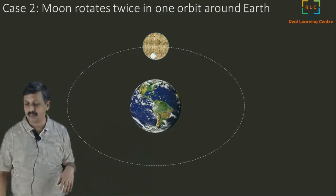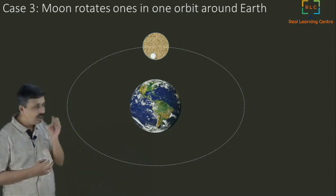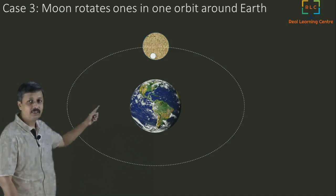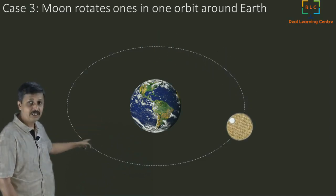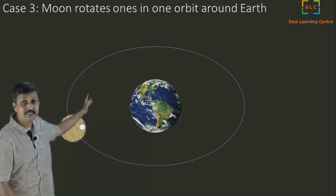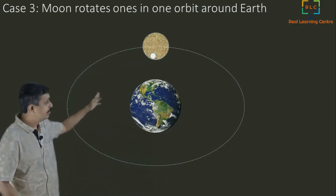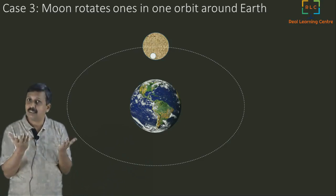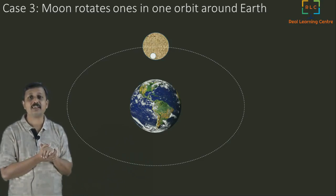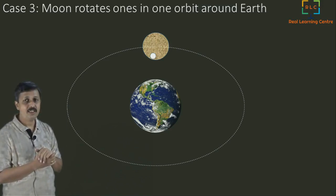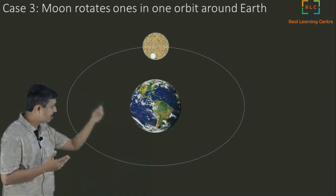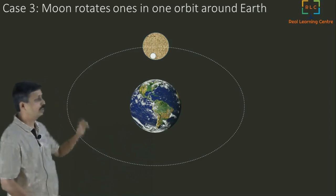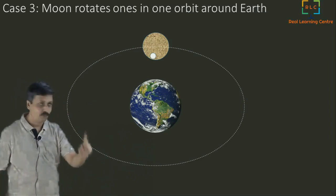Now case three: the moon rotates around its own axis only once while it completes one full orbit around the Earth. Watching carefully — as it rotates around its axis, we are still seeing the front of the moon throughout the entire journey. We keep seeing only the front of the moon, which matches our observation perfectly. This theory is correct. So the conclusion is: by the time the moon takes one round around the Earth, it also completes exactly one round around its own axis — it definitely rotates, but only once during its entire journey around the Earth.